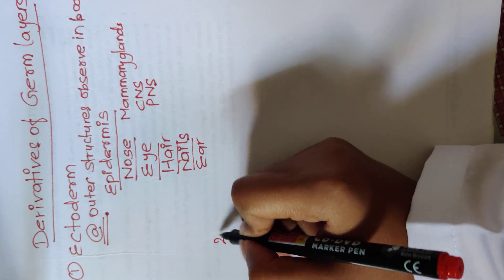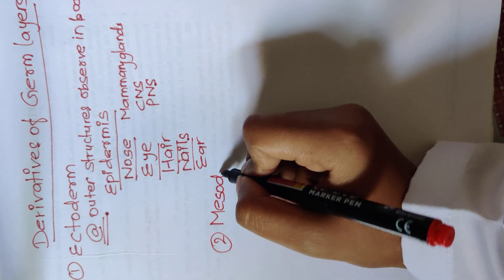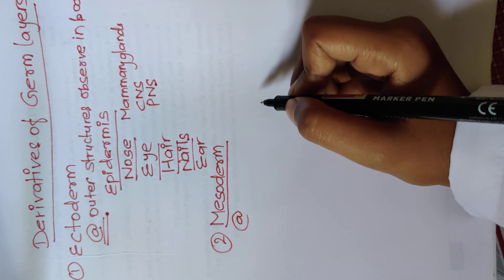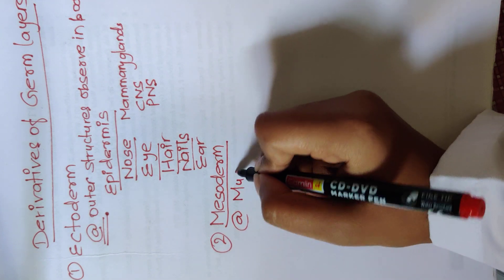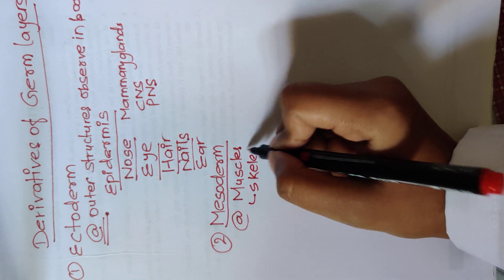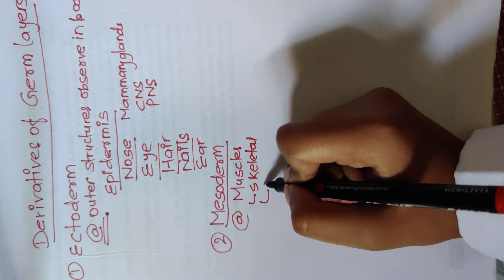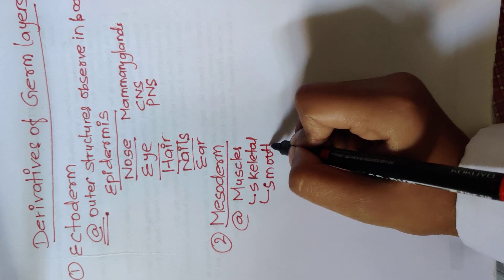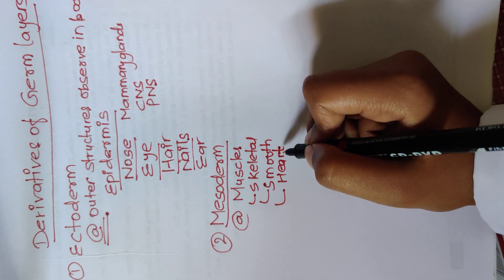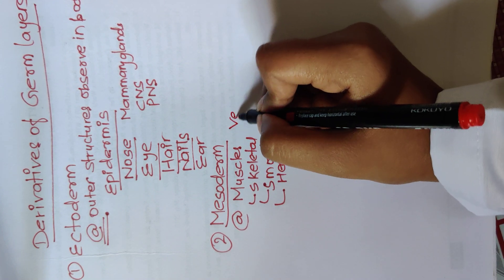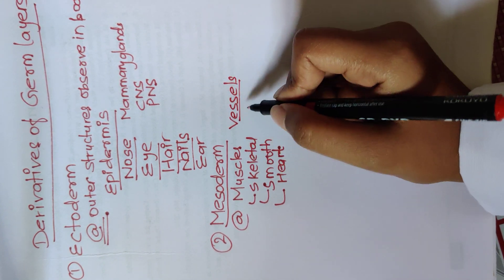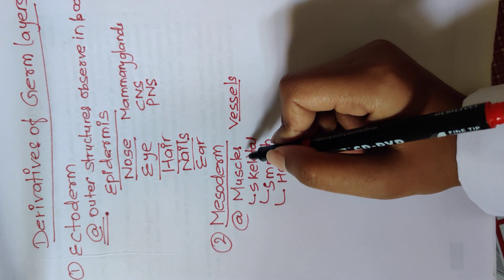Now let's talk about mesoderm derivatives. For mesoderm, remember muscles — it's easier to understand. You can write all the muscles: skeletal muscle, smooth muscles, and for cardiac you can write heart. It also includes vessels, and you can find the rhyming pattern — muscles, vessels.